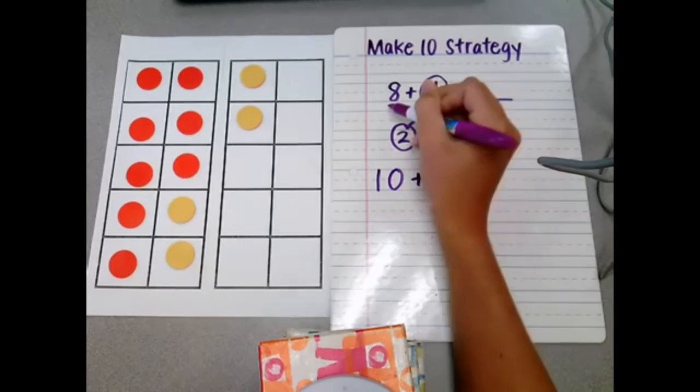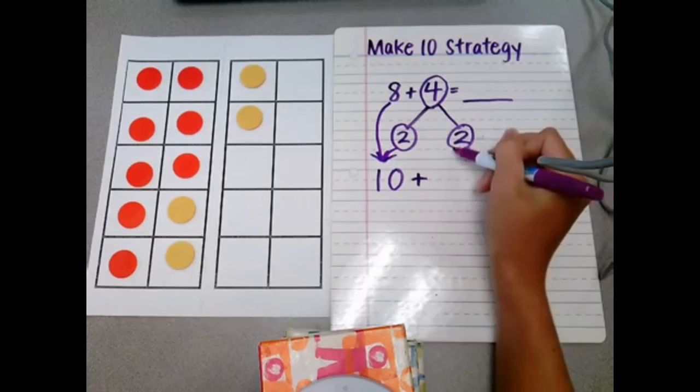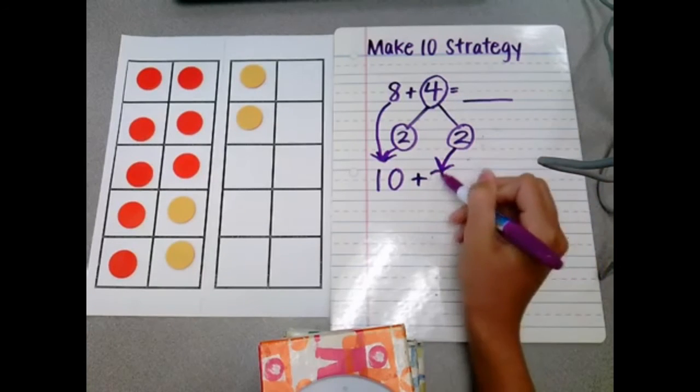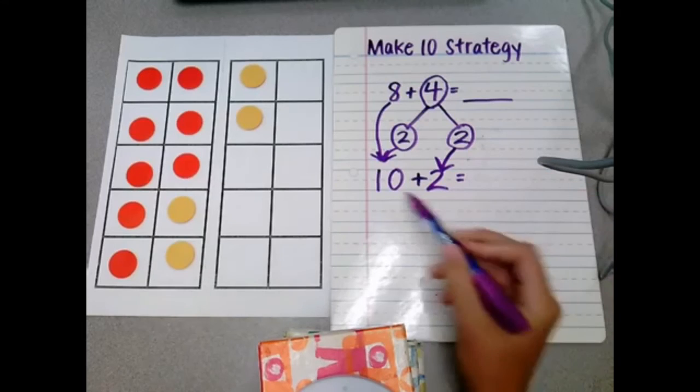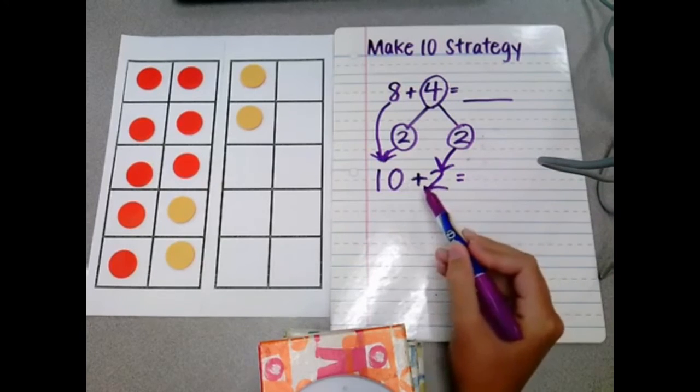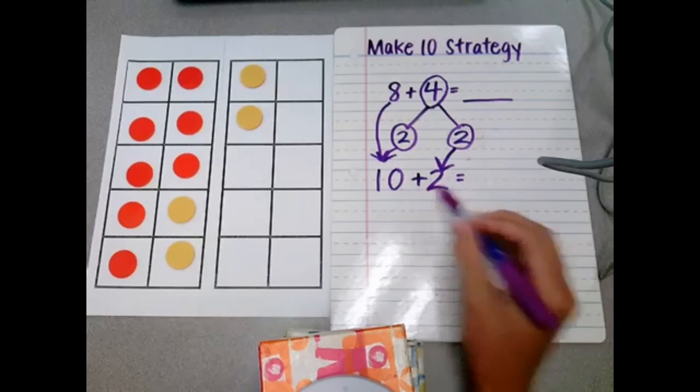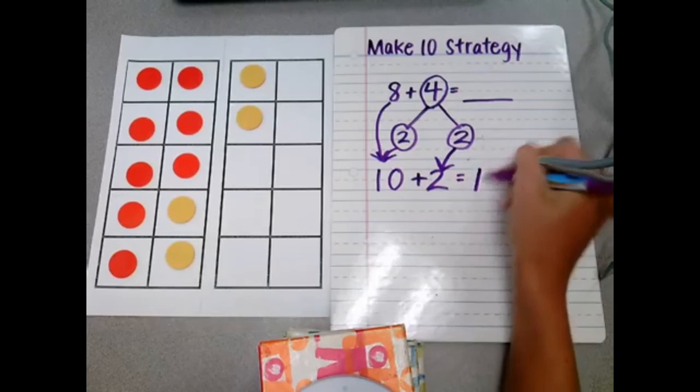Because now, I brought those two down. Now we can bring over what's remaining, the 2, to create a much easier problem, a much easier number sentence. This number sentence is much easier for kids to see and instantly recognize the answer. 10 plus 2 equals 12.